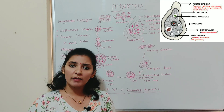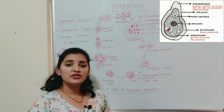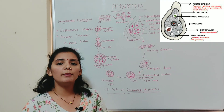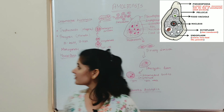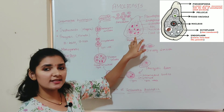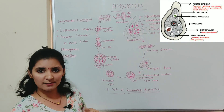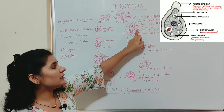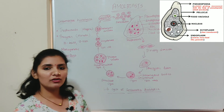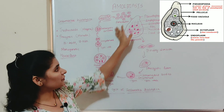The trophozoite feeds on the tissues of the wall of the large intestine, resulting in the formation of abscesses and ulcers. It is a purely amoeboid form measuring about 10 to 14 microns in size. The cytoplasm is divided into outer ectoplasm and inner endoplasm. The inner endoplasm contains a large nucleus, many ingested RBCs, and a large number of food vacuoles.